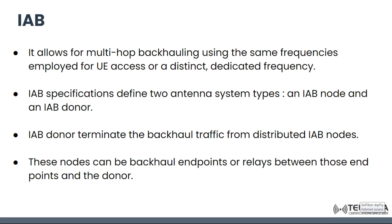These specifications define two antenna system types: an Integrated Access and Backhaul node and a donor. The function of the donor is to terminate the backhaul traffic from the distributed nodes. Basically, these nodes can be backhaul endpoints or act as relays between those endpoints and the donor. So the function of IAB is to allow for multi-hop backhauling.